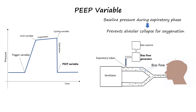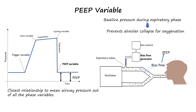Bias flow on a ventilator refers to the continuous flow of gas provided to the patient even during the expiratory phase of the breathing cycle. The bias flow ensures that a certain amount of baseline pressure remains in the circuit and lung after inspiratory pressure is released as the patient exhales. PEEP actually governs most of the respiratory cycle — of which traditionally 66% is expiratory time — and has the closest relationship to mean airway pressure out of all the phase variables.